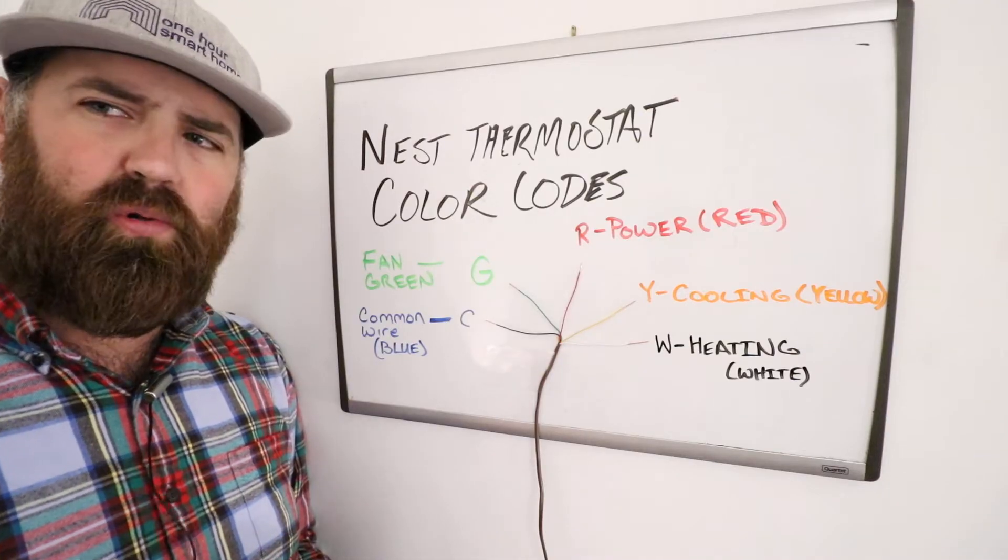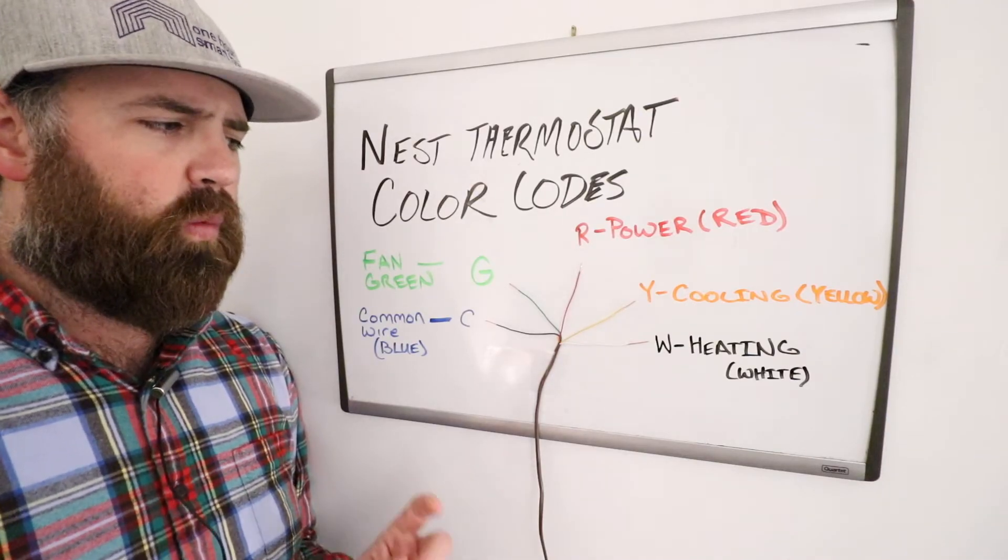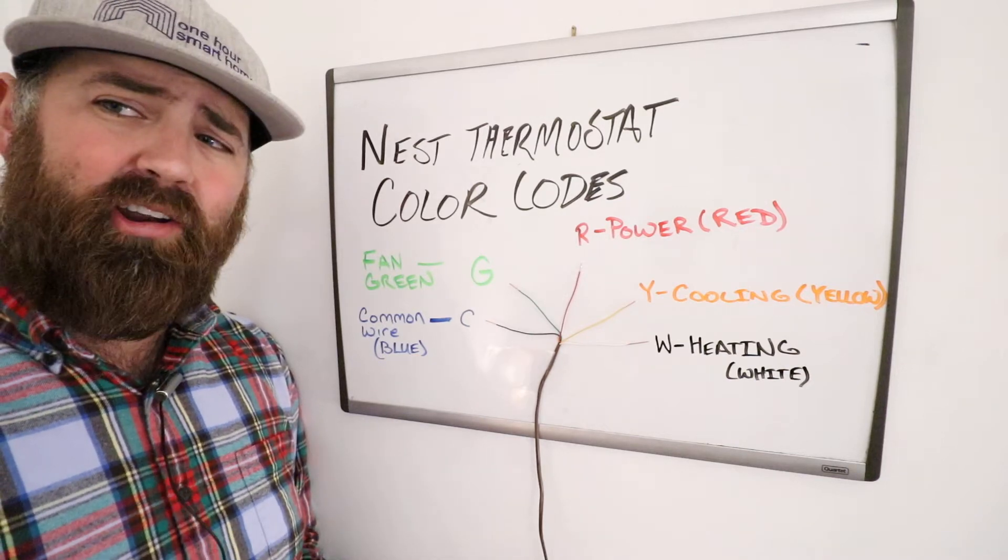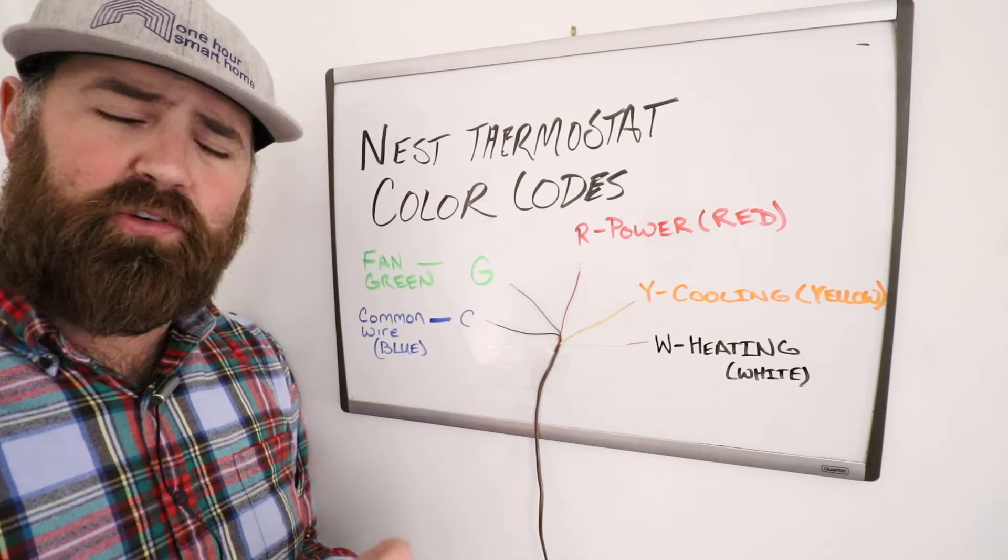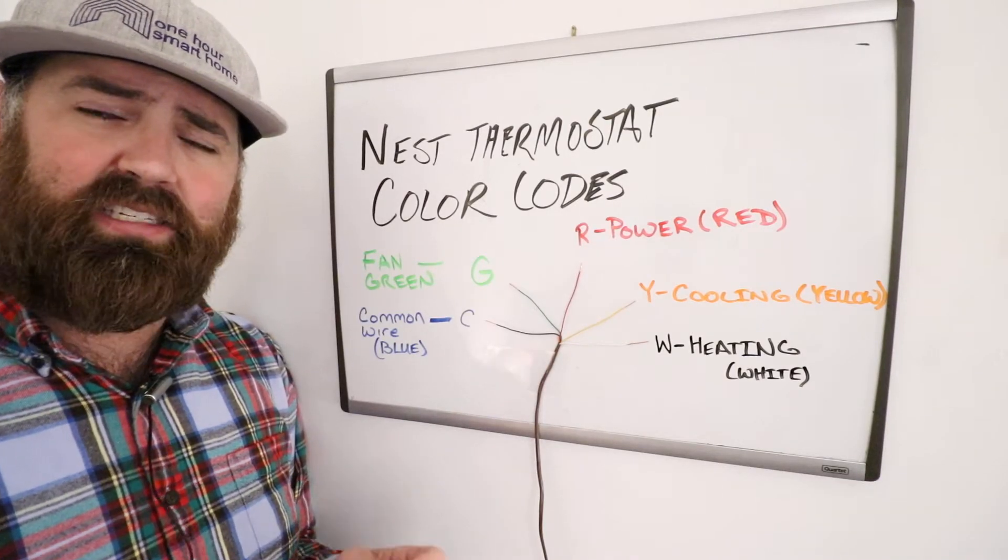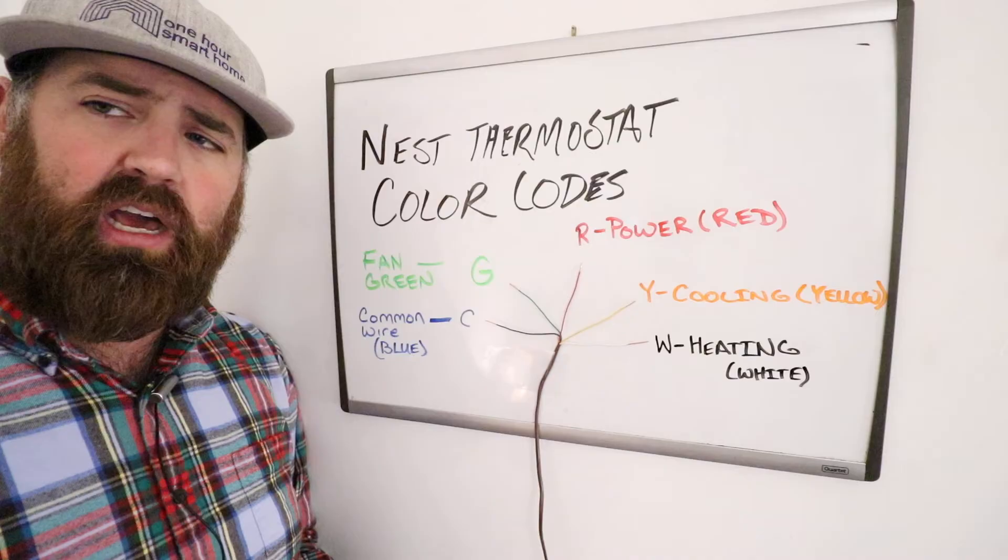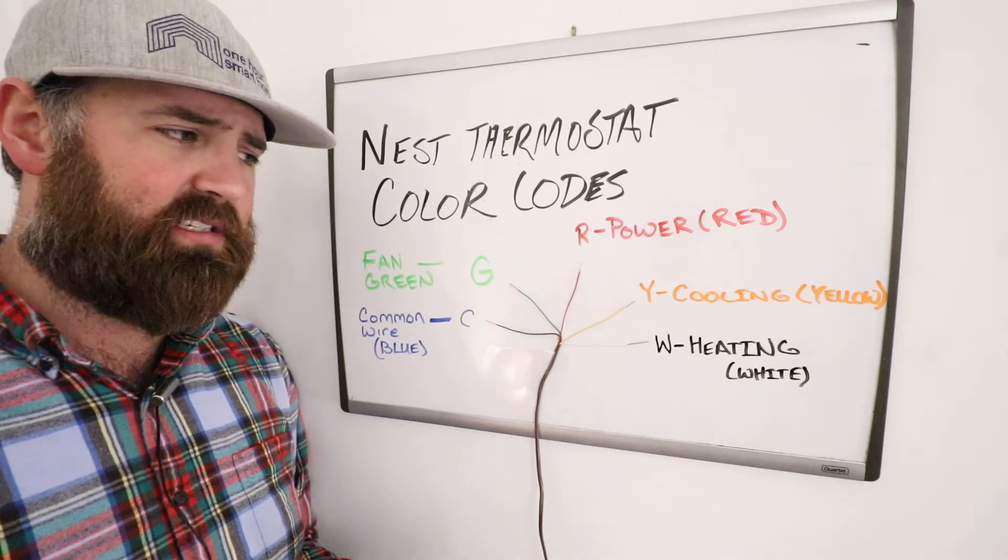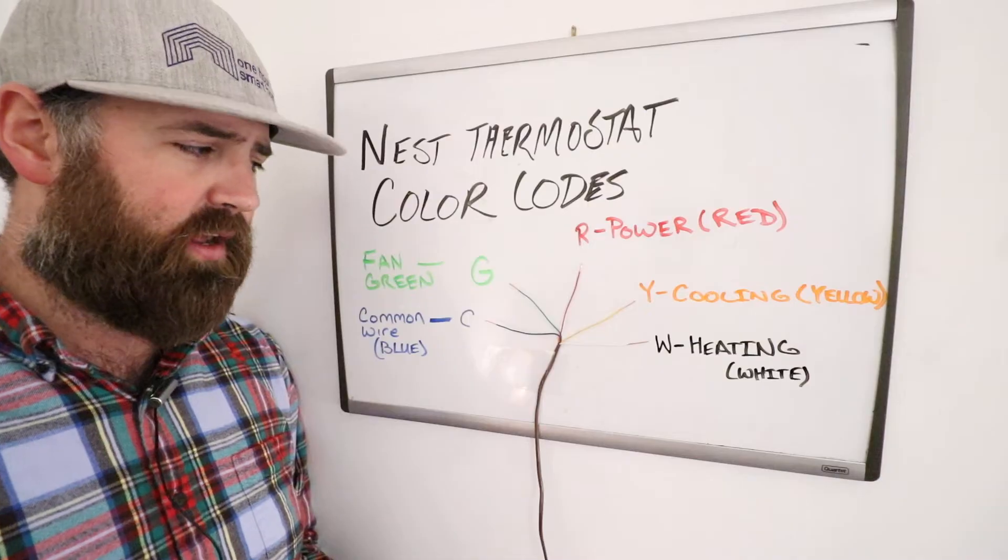The white wire or W-Wire, that is the heating wire that controls the signal that will turn on the heat, which turns on your furnace or the gas flame that's inside of your furnace that will then create hot air throughout your HVAC system. So that is what the W-Wire does.